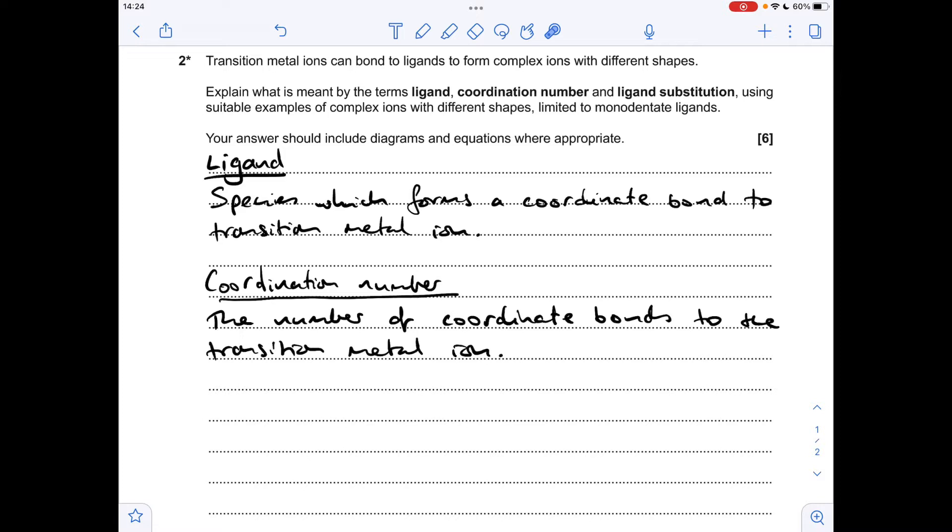Coordination number is the number of coordinate bonds. Remember that's dative covalent bonds you could say instead. The number of coordinate bonds going to the transition metal ion.